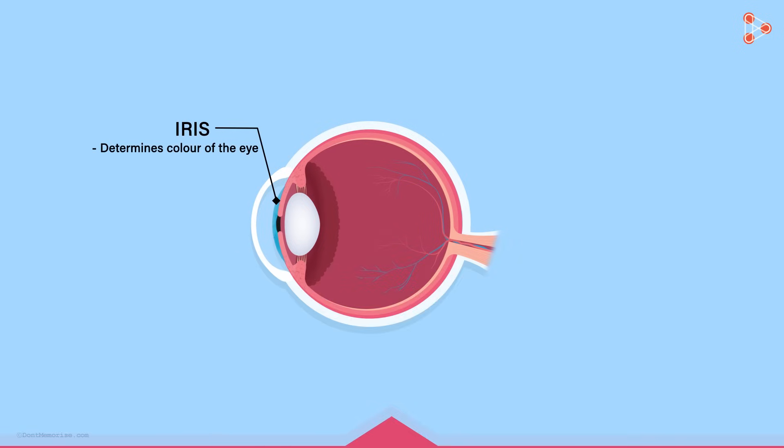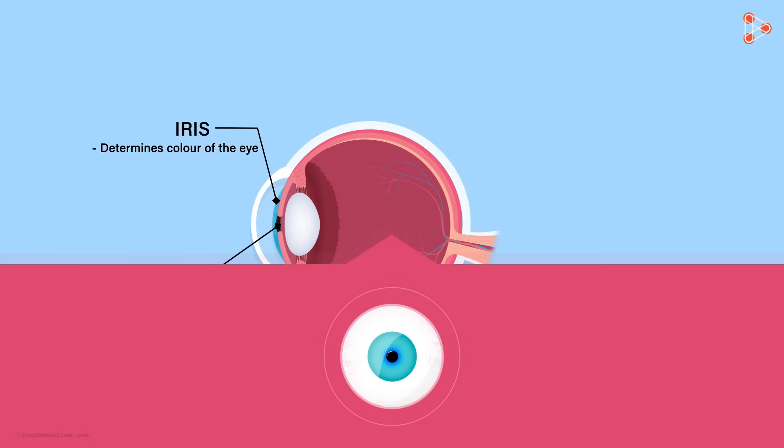There is a small opening at the centre of the iris for the light to enter. Do you know what it's called? It's called the pupil. The iris actually acts like a shutter of a camera. It controls the amount of light entering the eye by enlarging or shrinking and thereby adjusting the size of the pupil.